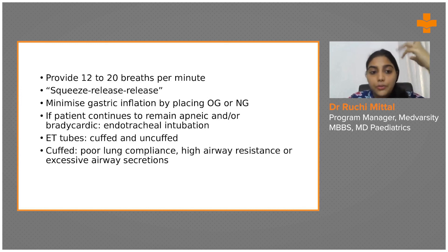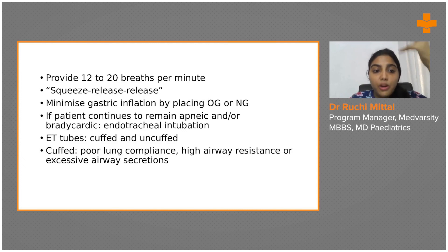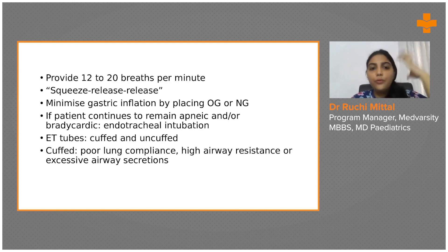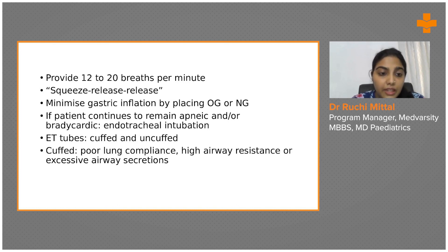ET tubes come in two types: cuffed and uncuffed. A cuffed ET tube is used when there is poor lung compliance, high airway resistance, or excessive airway secretions. Inflating the cuff forms a good seal with the airway, allowing delivery of higher pressures.